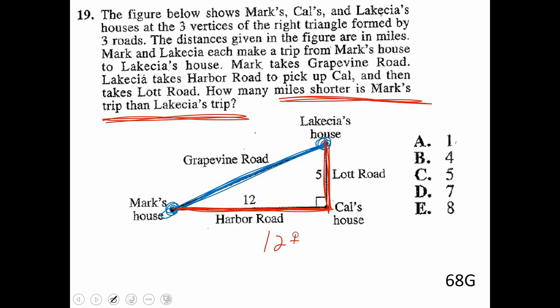Well, Lakeisha's trip is easy. It's just going to be 12 plus 5. So we know that her trip is 17. So again, that's for Lakeisha. We need to figure out Mark's trip. So this is where Pythagorean Theorem comes into play. We've got leg of 5, leg of 12. We're looking for the hypotenuse here. So we can set that up as 5 squared plus 12 squared equals C squared. 5 squared is 25. 12 squared is 12. Or excuse me, it's 144. That adds to 169 square root, square root. That's going to make that 13.